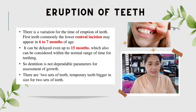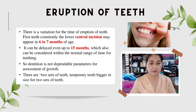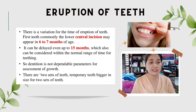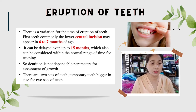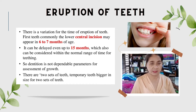Eruption of teeth: There is variation in the timing of eruption of teeth. The first tooth, commonly the lower central incisor, may appear at 6 to 7 months of age. It can be delayed even up to 15 months, which is still considered within the normal range. Therefore, dentition is not a dependable parameter for assessment of growth.